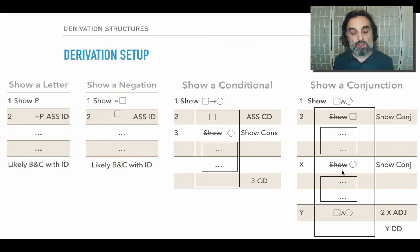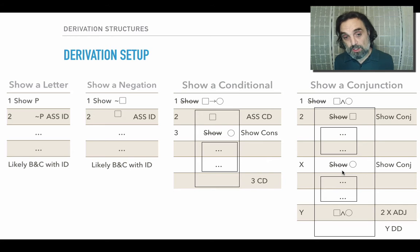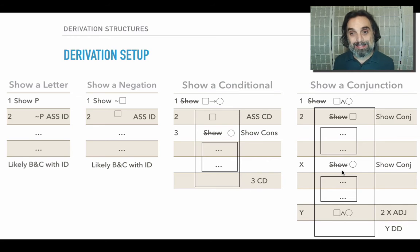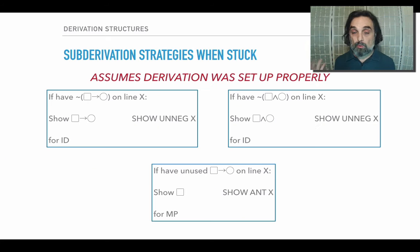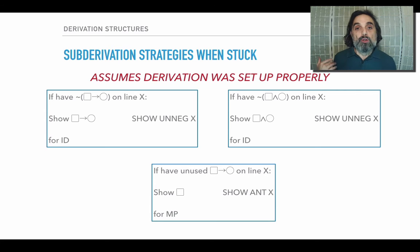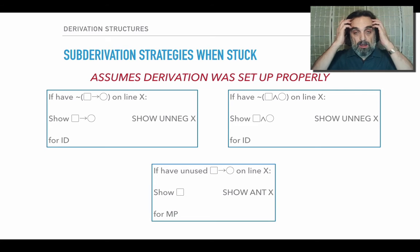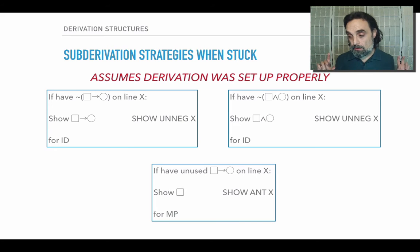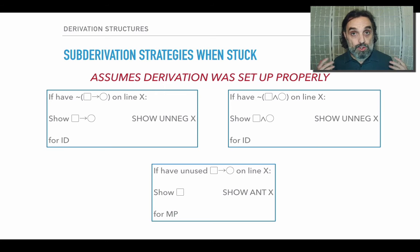So those are the ways in which we set up a derivation, including these sub-derivations. Now, what happens when we get stuck? When our derivation gets stuck, we need to do a sub-derivation. We have two basic sub-derivation strategies with associated show commands.